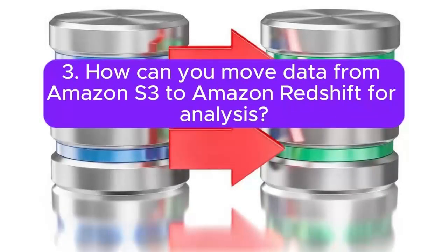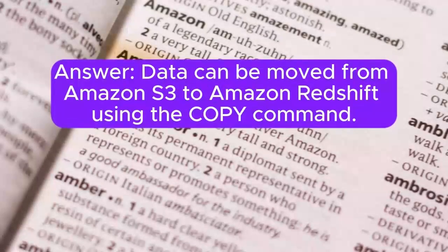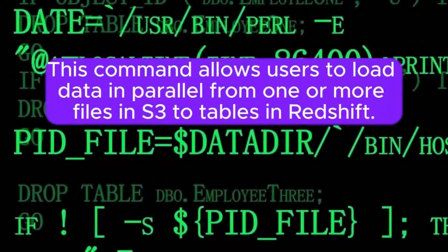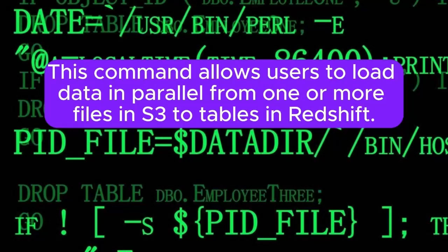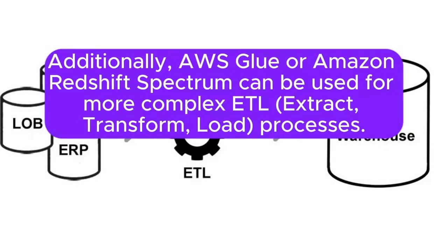3. How can you move data from Amazon S3 to Amazon Redshift for analysis? Answer: Data can be moved from Amazon S3 to Amazon Redshift using the COPY command. This command allows users to load data in parallel from one or more files in S3 to tables in Redshift. Additionally, AWS Glue or Amazon Redshift Spectrum can be used for more complex ETL (Extract, Transform, Load) processes.